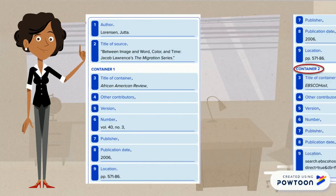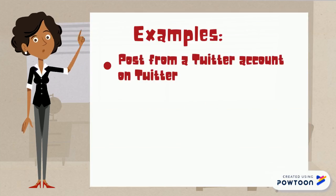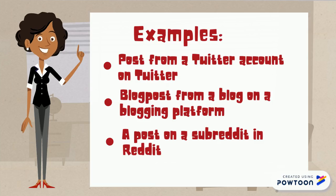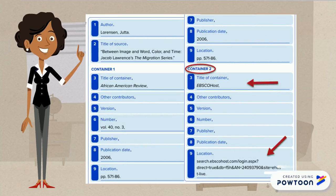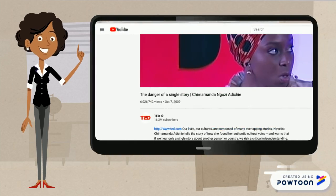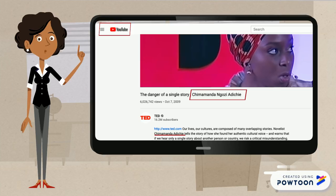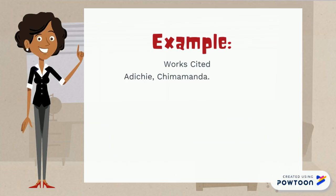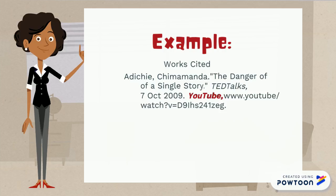Some websites have multiple containers. If your source is part of a website that's a platform for multiple sources from a variety of creators and publishers, then you want to include information about that platform. To do this, add a second container section. For example, a video on YouTube can have an individual creator that is presented on a larger YouTube channel. The creator is the author, the channel is the first container, and YouTube is the second container.